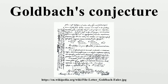A Goldbach number is a positive integer that can be expressed as the sum of two odd primes. Since 4 is the only even number greater than 2 that requires the even prime 2 to be written as the sum of 2 primes, another form of Goldbach's conjecture is that all even integers greater than 4 are Goldbach numbers. The expression of a given even number as a sum of 2 primes is called a Goldbach partition of that number.